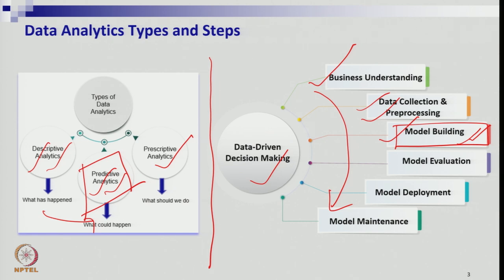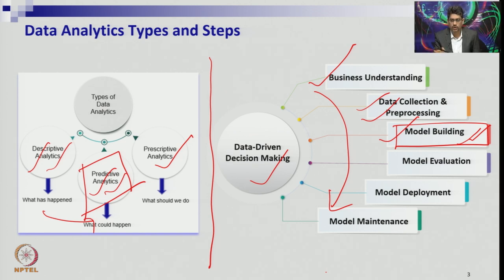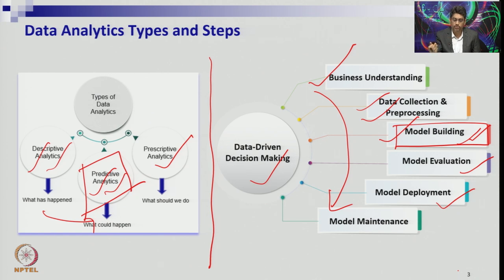Once model building is done, the next step is to evaluate the model — testing and validation with data to determine how accurate the model is. After model evaluation, the next step is deployment, which means implementing the developed software, algorithm, or prediction model to the company as part of consulting. This is called the implementation or commissioning phase.